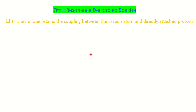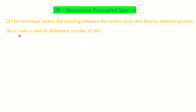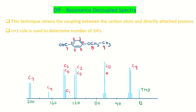Next we will look at the off-resonance decoupled spectra. The advantage over fully decoupled spectra is that it retains important information about whether you have CH3, CH2, or CH carbons in your unknown molecule — information that is lost in the proton decoupled spectrum. This technique retains the coupling between carbon and proton, and by applying the n+1 rule you can see the splitting, though the coupling intensity is reduced.